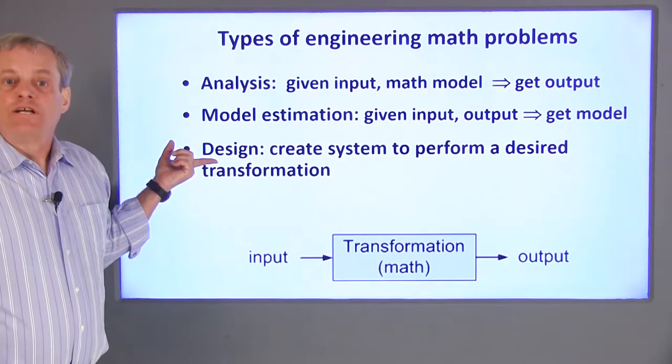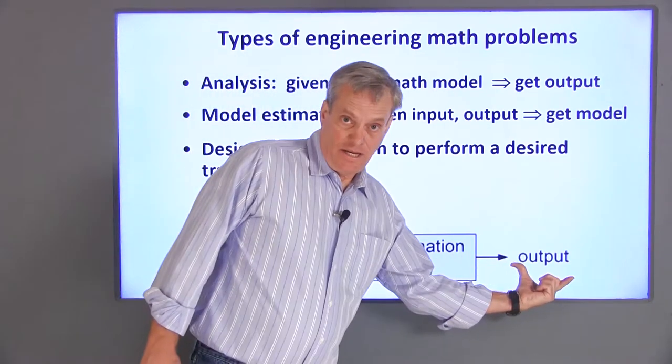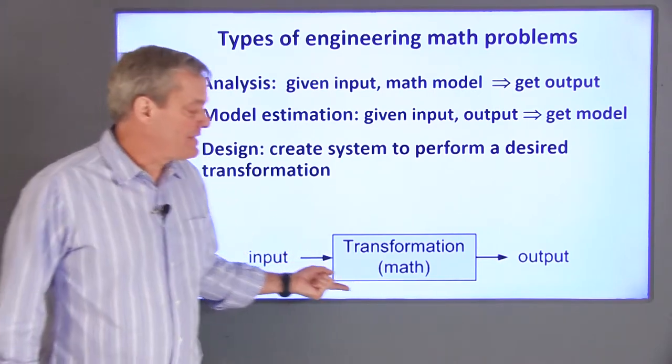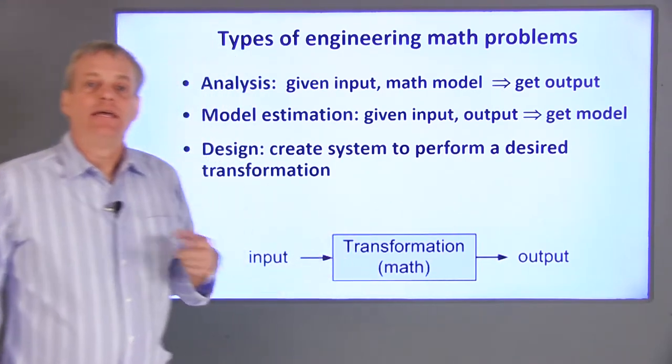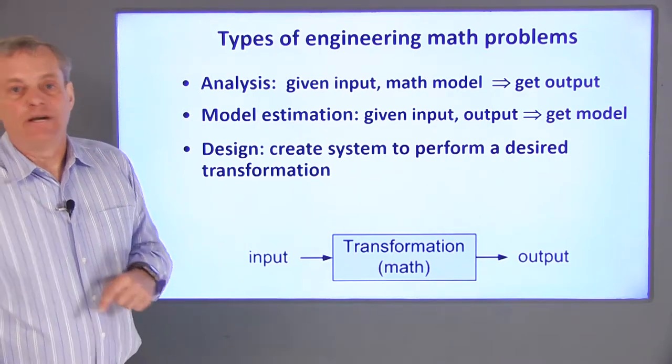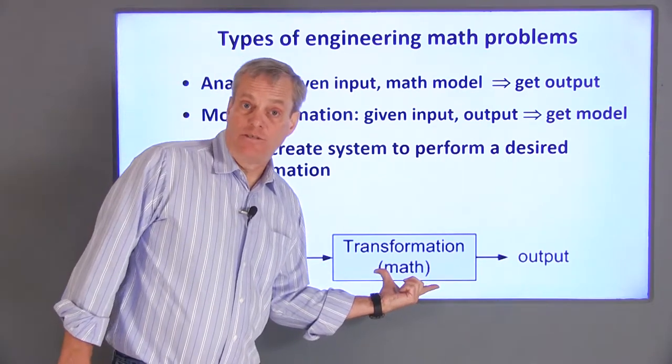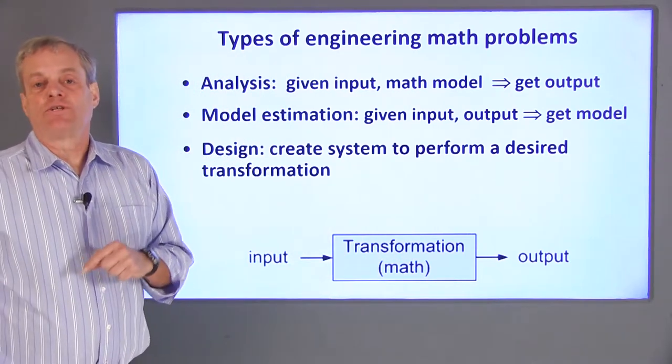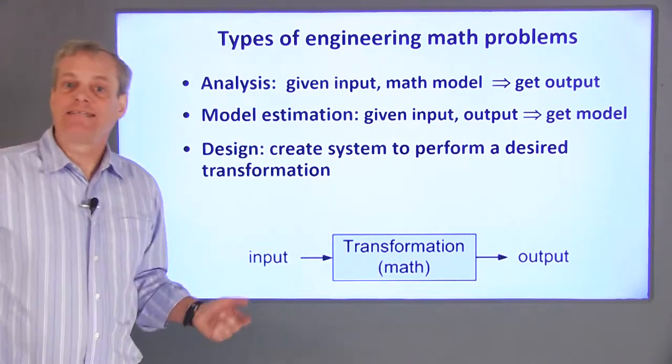In design, we generally know what response we need as a result of some input, and we need to decide what system to implement. In design, we not only need to identify a desired mathematical relationship between the input and the output, but we also need to be able to create a physical system that has that relationship.